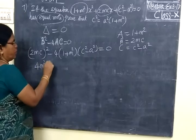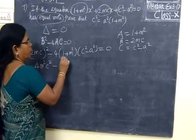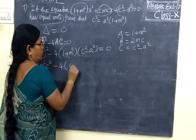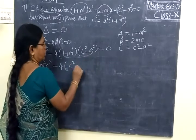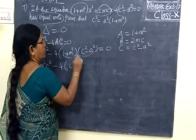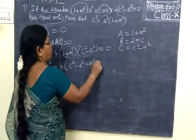4M²C² minus 4, you multiply, 1 into C² is C², you get minus A²,